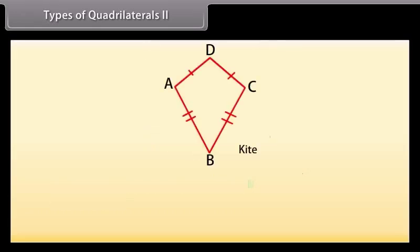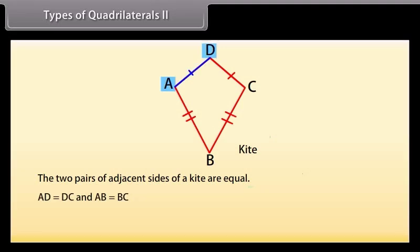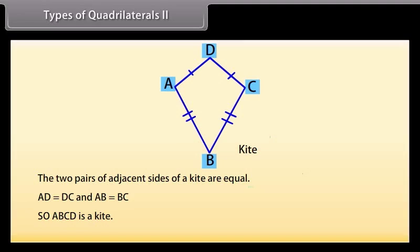The last type is kite. The two pairs of adjacent sides of a kite are equal. Here, AD is equal to DC and AB is equal to BC. So ABCD is a kite.